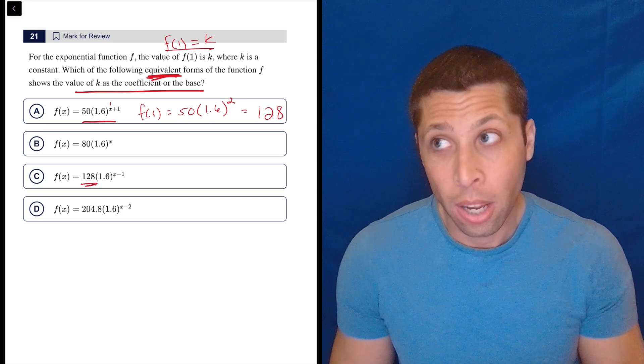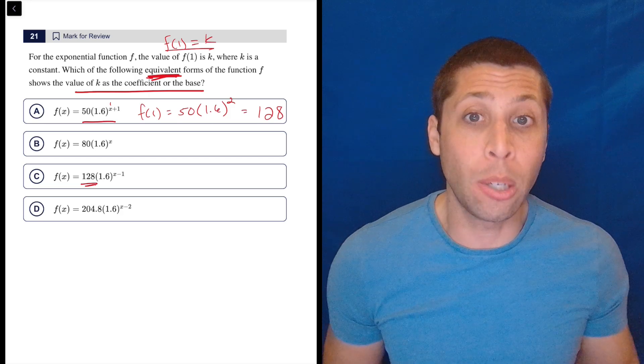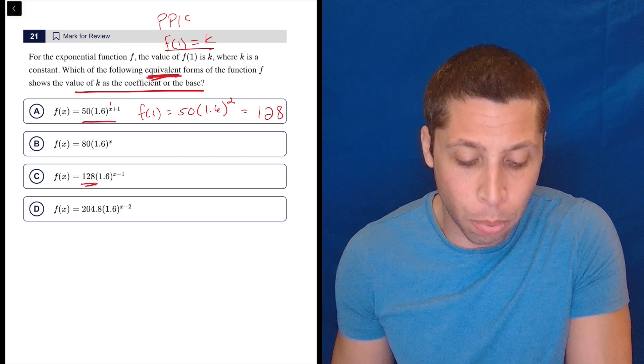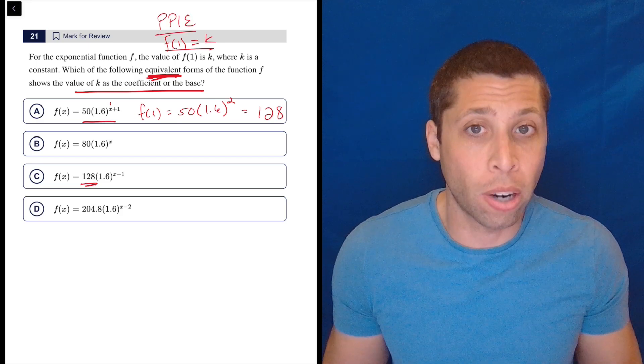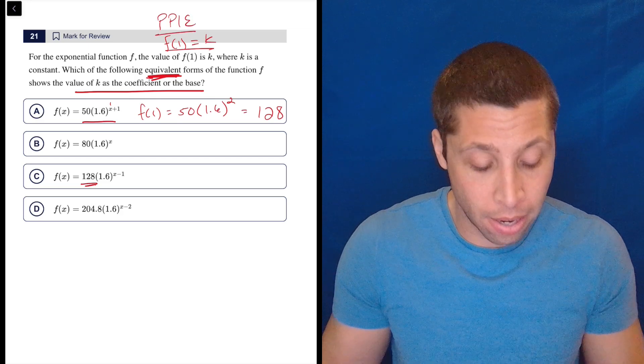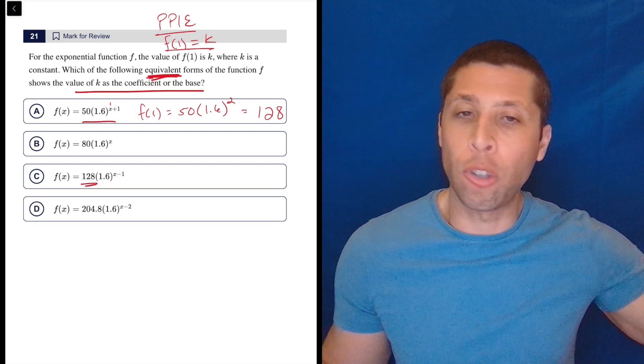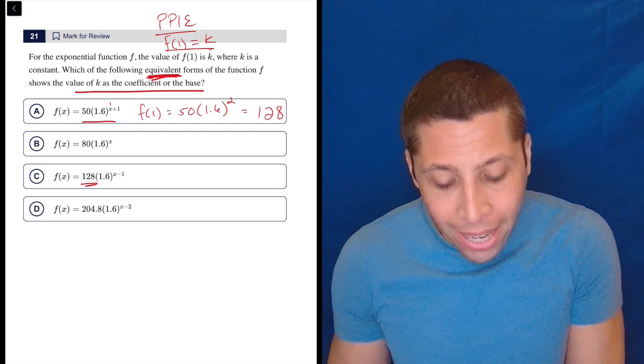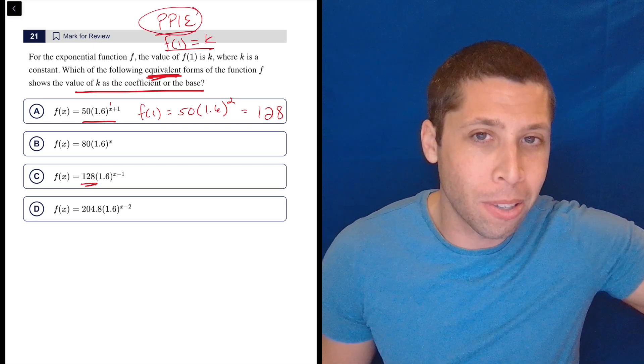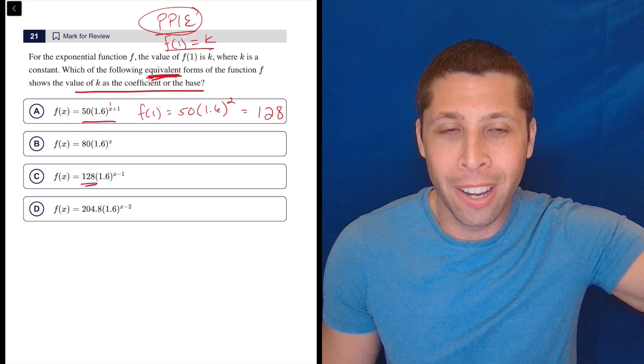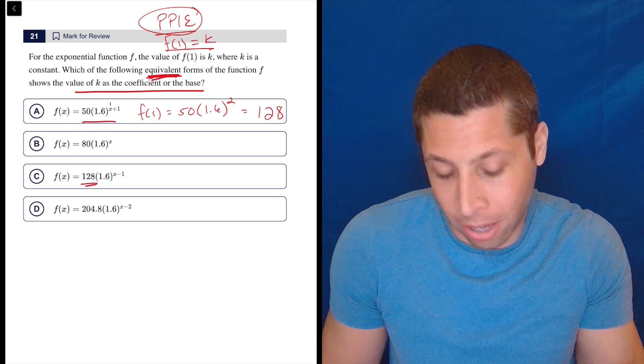They've told me that in the question. But even if you didn't see that part, you at least should know what to do. F of 1 equals k is basically a plug points into equations kind of instruction. Put in 1 and see what you get. And I think if you were totally confused by the question, but you had still kind of mindlessly followed the plug points into equations instruction, you probably would have figured it out.